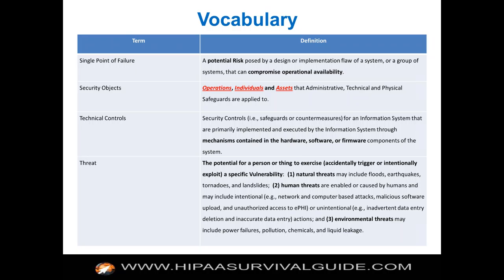The definition of a threat is the potential for a person or thing to accidentally trigger or intentionally exploit a specific vulnerability. If you've got water as the threat and a hole in your boat, water's the threat, the hole is the vulnerability, and water's likely going to exploit that vulnerability — your ship will sink if you don't plug that hole. You can break threats down into natural, human, or environmental, but those are academic categories — break them down if it makes sense for you.